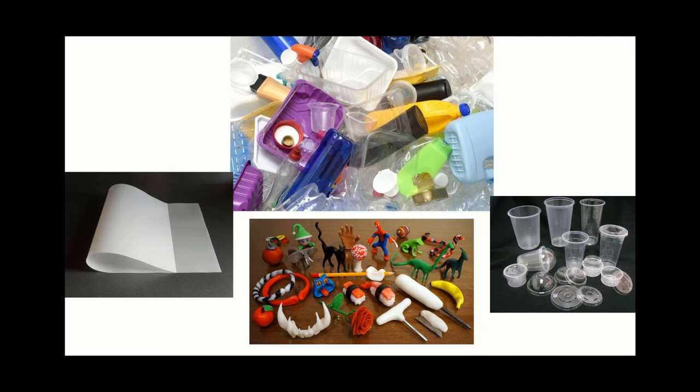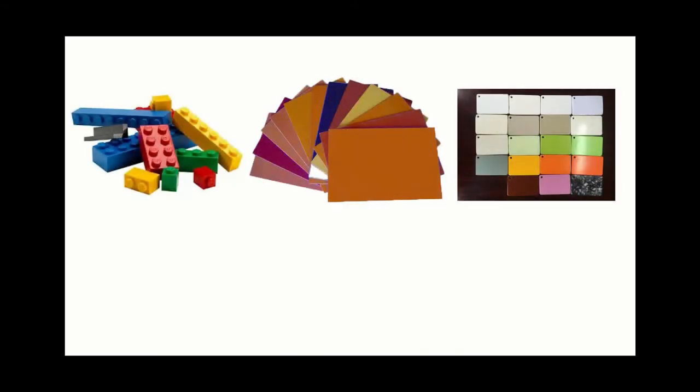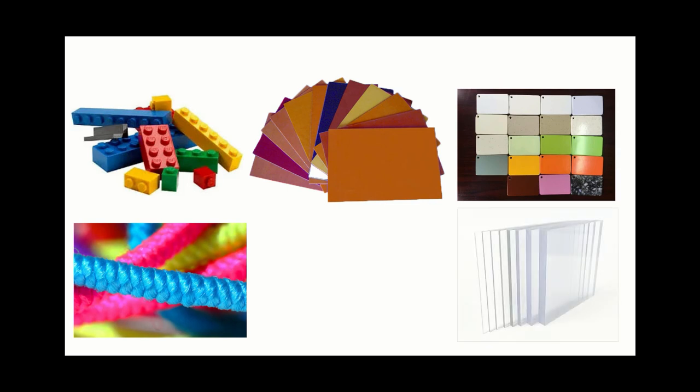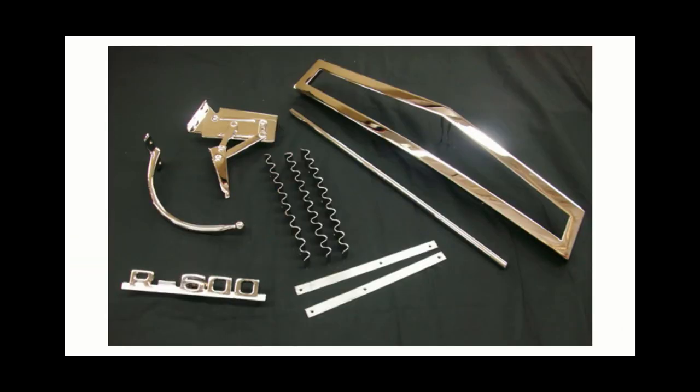Many plastics can be electroplated, like ABS, phenolic plastics, urea formaldehyde, nylon, and polycarbonate. You'll often find these parts on cars, plumbing, households, and electrical fittings that look metallic but are, in fact, plastic.